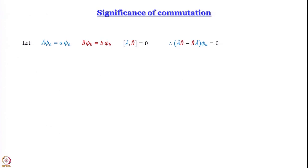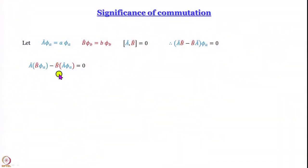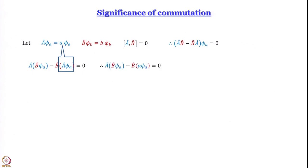Now we can write: (ÂB̂ − B̂Â) operating on φ_a equals zero. We are writing φ_a; you can write φ_b too — the same result holds. So ÂB̂φ_a minus B̂Âφ_a gives zero. The sequence of operations means B̂ operates on φ_a first and  operates on the result, or  operates on φ_a first and then B̂ operates. So  operating on (B̂φ_a) minus B̂ operating on (Âφ_a) equals zero. We already know Âφ_a: it equals the eigenvalue a multiplied by φ_a.